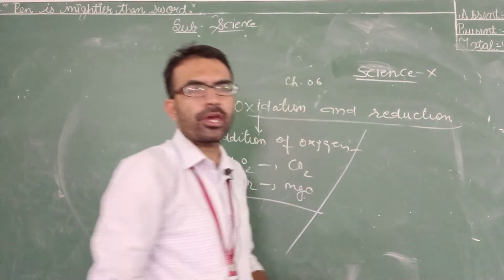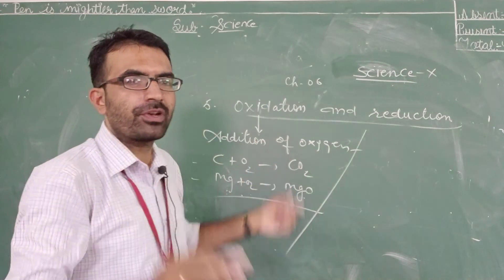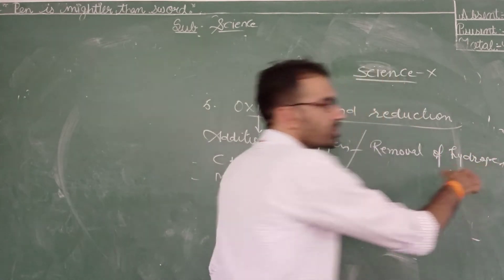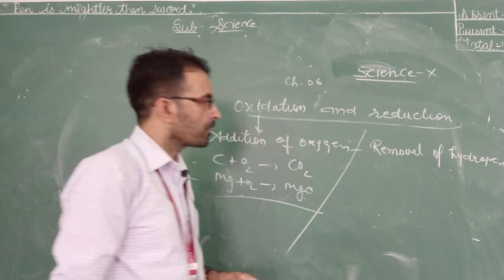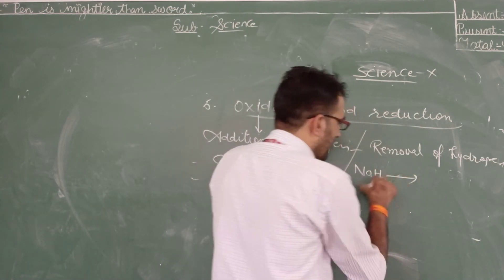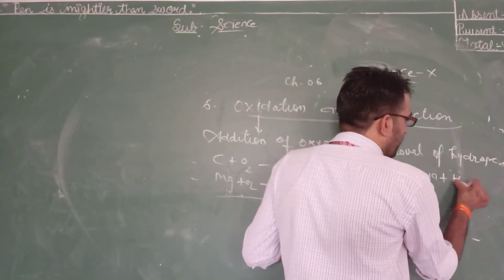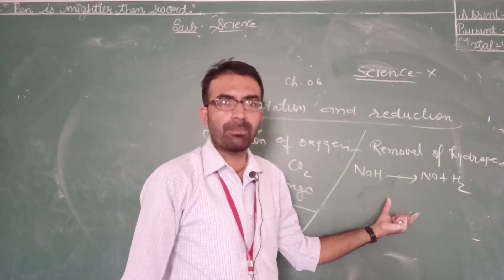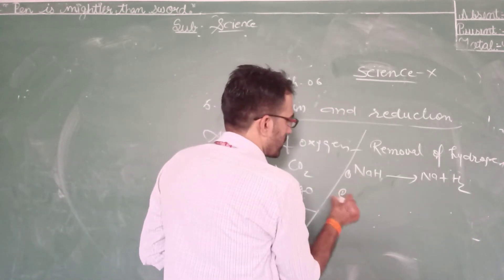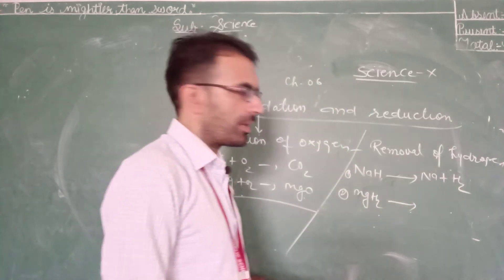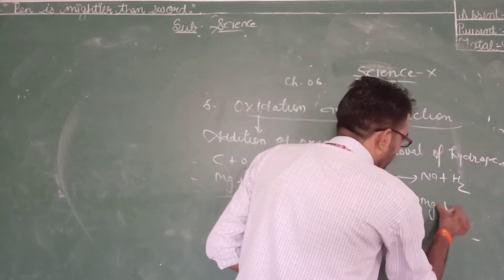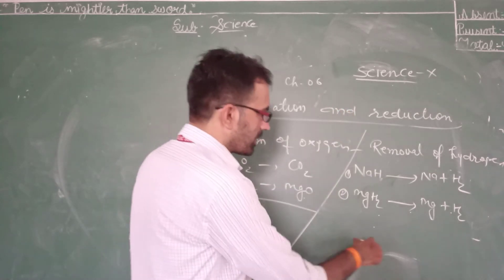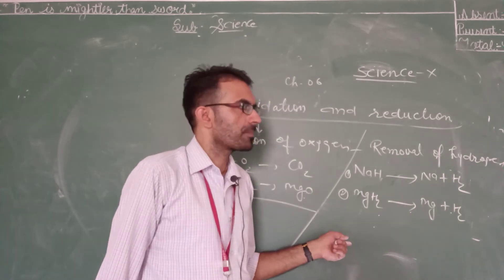Along with addition of oxygen, oxidation also includes the removal of hydrogen. For example, Na plus S2 gives NaS2 — this is an example of removal of hydrogen and thus an oxidation reaction. Another example: MgH2, which is magnesium hydride, when it undergoes dissociation gives Mg plus H2 — this is also an example of removal of hydrogen and an oxidation reaction.